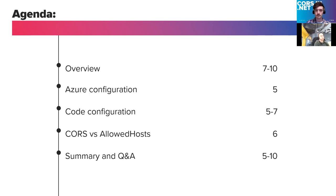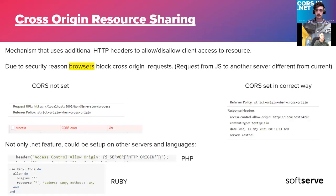CORS is an abbreviation for Cross-Origin Resource Sharing. It's a mechanism in the browser based on HTTP headers. Due to security, browsers keep a strict same-origin policy, meaning that if you make a request to a server, the server retrieves requests from resources it shares. But if you make calls to another server from your resource, those resources could be blocked due to this strict origin policy.